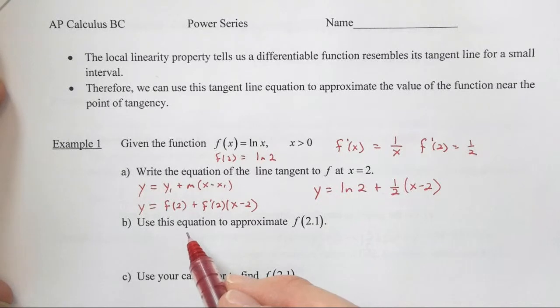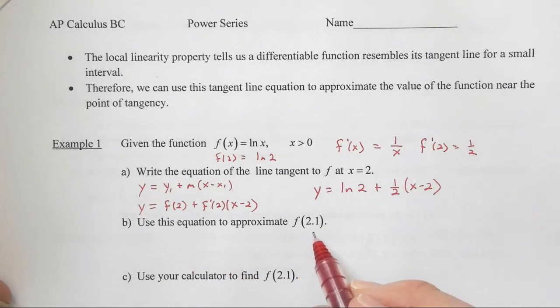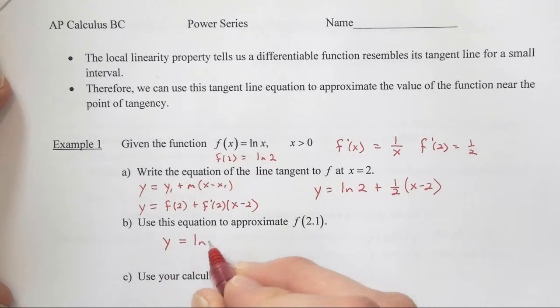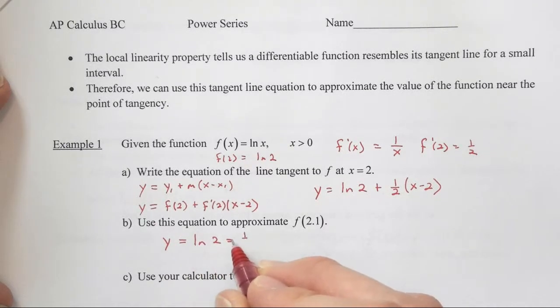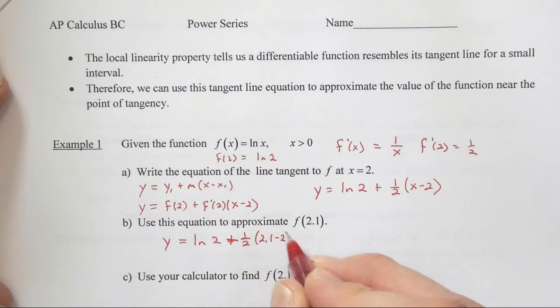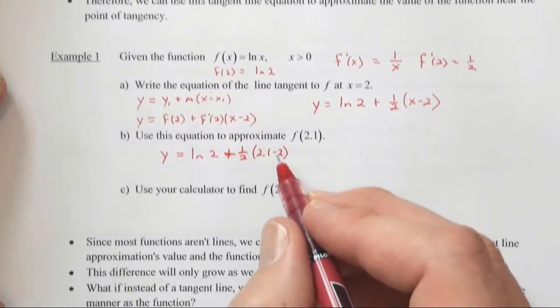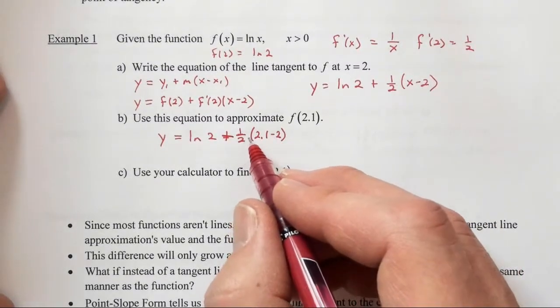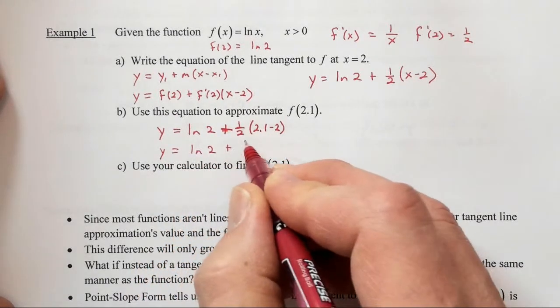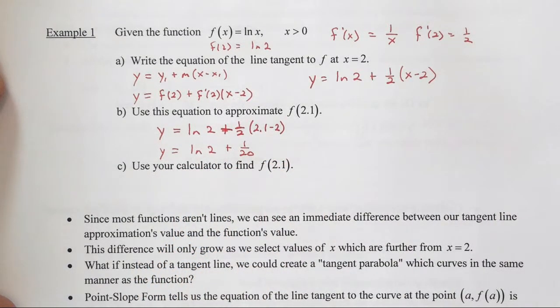Now we need to use this equation to approximate f of 2.1. So we'll plug in 2.1 for x, and when we do so, that should be a plus sign there, 1 half, and then we have 2.1 minus 2. So 2.1 minus 2 is a tenth, and a tenth times a half is a twentieth, so y is going to be equal to the natural log of 2 plus 1 over 20.